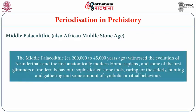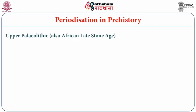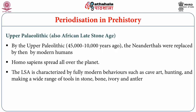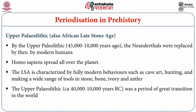The Middle Paleolithic, also called the African Middle Stone Age, witnessed the evolution of Neanderthals and the first anatomically modern Homo sapiens, with some of the first glimmers of modern behavior — sophisticated stone tools, caring for the elderly, hunting and gathering, and some symbolic or ritual behavior. The Upper Paleolithic, also the African Late Stone Age, covers around 45,000 to 10,000 years ago. Neanderthals were replaced by modern humans; Homo sapiens spread all over the planet. The Late Stone Age is characterized by fully modern behavior such as cave art, hunting, and making tools in stone, bone, ivory, and antler.